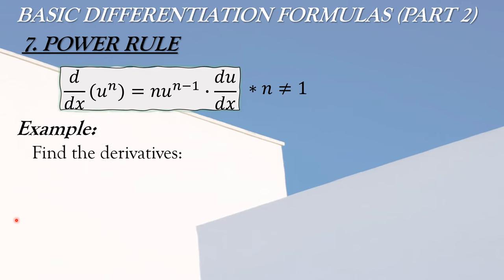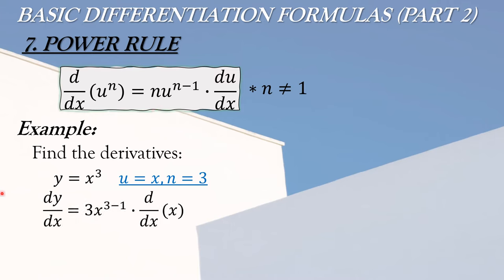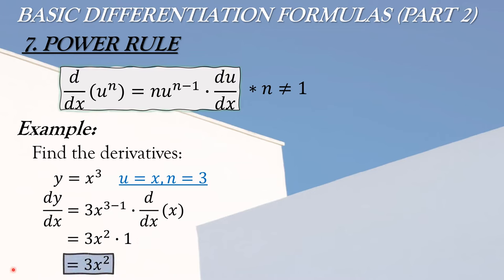Example: find the derivative of y equals x cubed. Ang u natin is yung x at ang n natin is yung 3. The solution: dy/dx equals 3 times x raised to n minus 1, so 3 minus 1, times the derivative of u which is x with respect to x. Magiging 3x squared because 3 minus 1 is 2, times the derivative of x is 1. So the final answer is 3x squared.